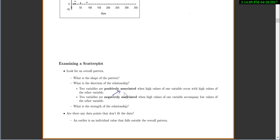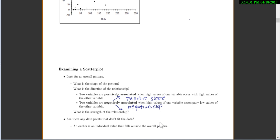Negatively associated means you're going down or you have a negative slope. And we'll ask things like, what's the strength of the relationship? And are there any data points that don't fit the data? Remembering that an outlier is an individual value that falls outside the overall pattern.